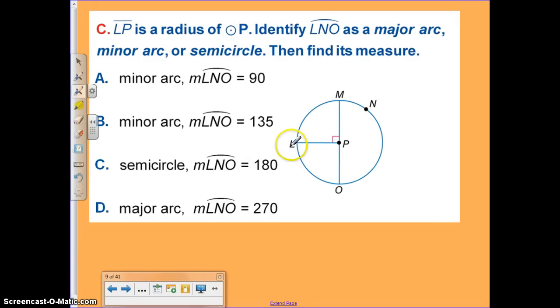All right, if LP, again, is the radius of circle P, identify LNO as major, minor, or semicircle. And since this is greater than 180 degrees, or greater than a semicircle, I know it's a major arc. And since this is 90, and this is a semicircle, we know it would be 270.